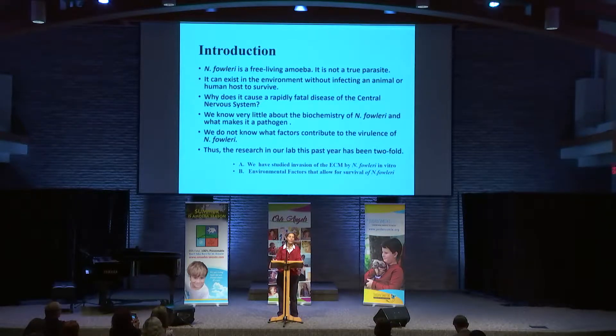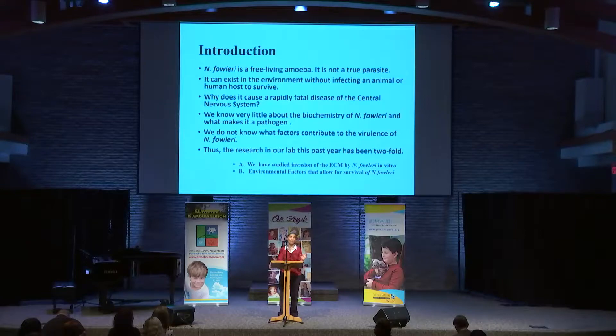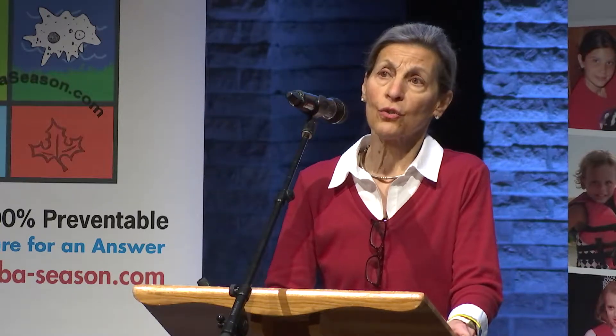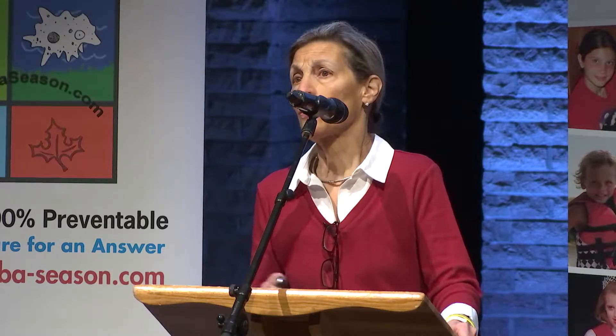Naegleria fowleri is a free-living amoeba. It's not a true parasite — it never has to infect a human to survive. It can live in the environment, feeding on bacteria and yeast. So we ask ourselves: why does it cause a fatal disease of the central nervous system? We know very little about the biochemistry of Naegleria fowleri. We don't know what makes it a real pathogen or what factors contribute to its virulence. The research in our laboratory this past year has been twofold.